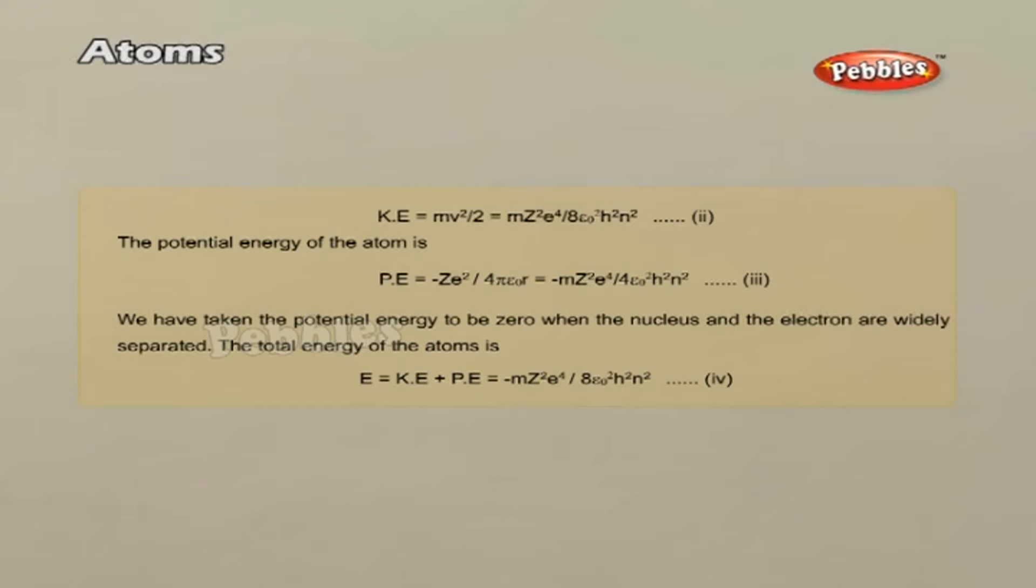Let us consider the case of an ion with the charge of nucleus being Ze and an electron moving with a constant speed v along a circle of radius r with the centre at the nucleus. The force acting on the electron is given by the expression shown above.